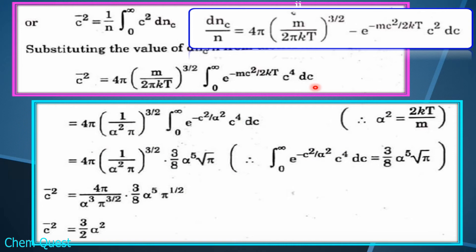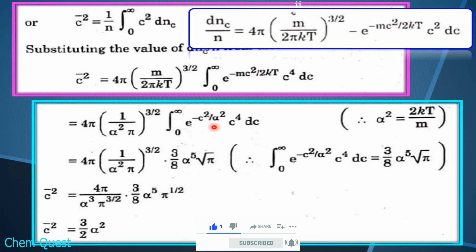Now we introduce a simplification factor alpha. We define α² = 2kT/m. Note that the exponent in our integral contains m/2kT, which is the reciprocal of α². Therefore, when simplifying, we write the exponential term e^(−mc²/2kT) as e^(−c²/α²), replacing 1/α² in the denominator. This simplifies the integral expression significantly.